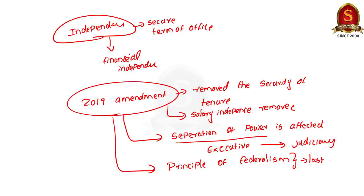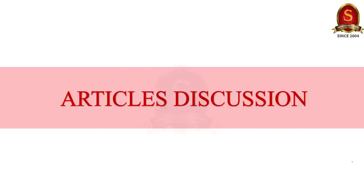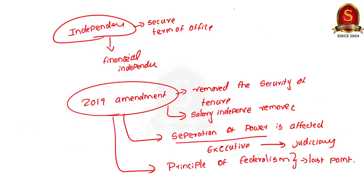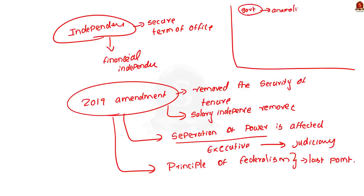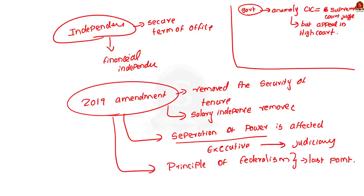So till now we saw the negative aspects of the amendment. Now let us see the other side — the justifications the government gave for the amendment. There is an anomaly in case of the Central Information Commission: the Central Information Commissioner has the status of a Supreme Court judge, but an appeal against the judgment of the Central Information Commission can be made in a high court. The government said the proposed amendment does not dilute the Information Commission but actually strengthens the overall right to information structure. We have clearly addressed the question and discussed the implications of the amendment on the independence and autonomy of the Information Commission.